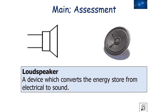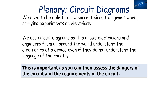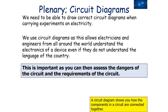A loudspeaker converts the energy store from the electrical circuit into sound. A thermistor is a device which converts temperature or heat to resistance. We need to be able to draw correct circuit diagrams when carrying out experiments on electricity. Circuit diagrams allow electricians and engineers from all around the world to understand the electronics of a device, even if they don't understand the language of the country it was produced in, allowing them to assess the dangers and requirements of the circuit.